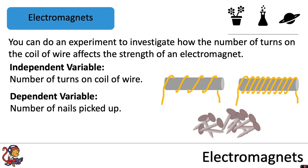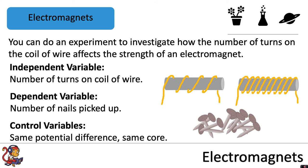Our dependent variable is going to be the number of nails picked up, or it could be something like the number of paper clips picked up. The control variables: it's important to keep the same potential difference because that will affect the current flowing through the wire and therefore the strength of the electromagnet, and the same core.